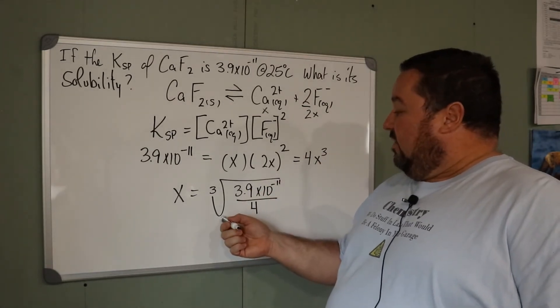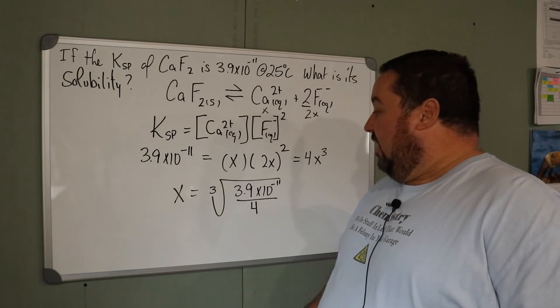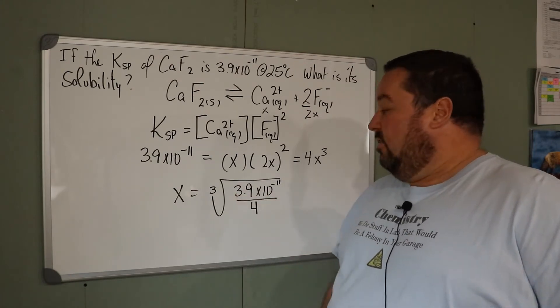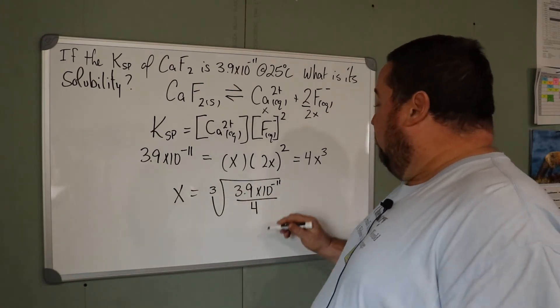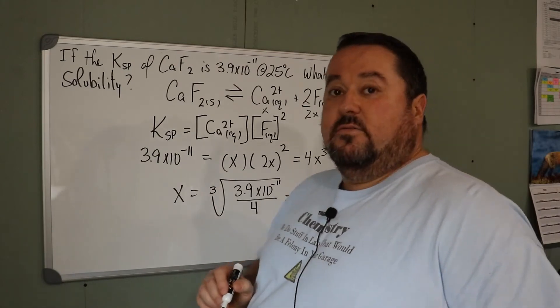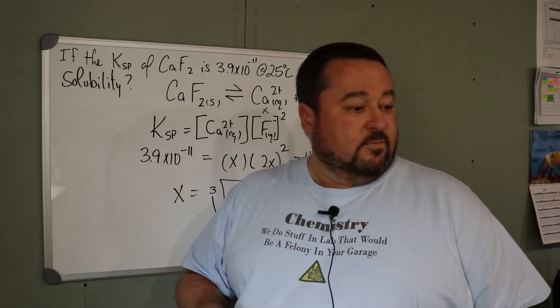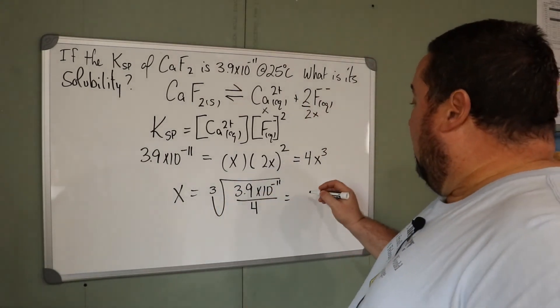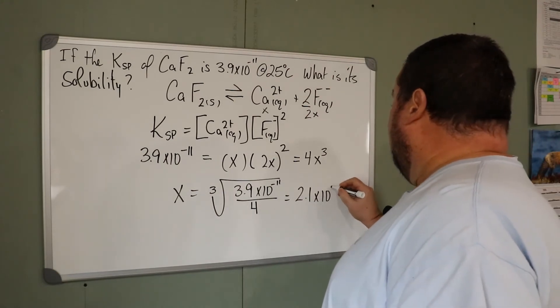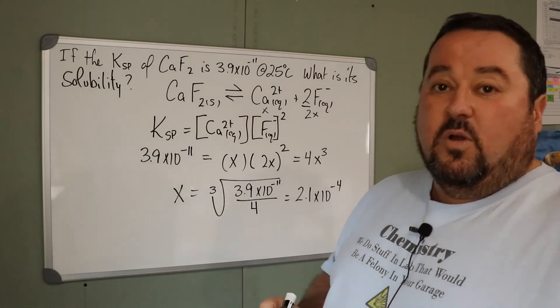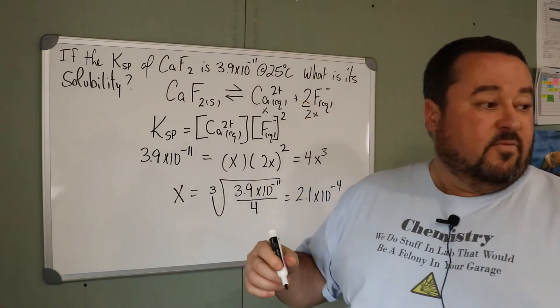Don't forget, this radical includes the 4 in the denominator. So this entire operation is done before taking the cubed root. Use your brackets on your calculator appropriately, and you should get 2.1 times 10 to the -4 to be the molar solubility of calcium fluoride.